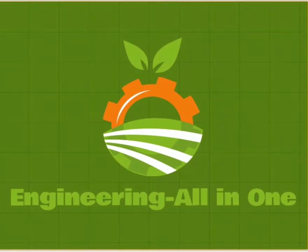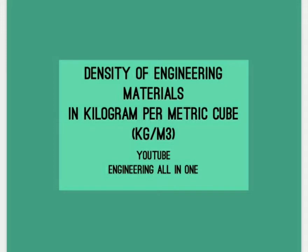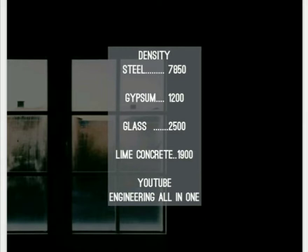Welcome to my channel Engineering All-in-One. Today we are looking at a topic related to the density of engineering materials. We are expressing density as mass per unit volume in kg per cubic meter. The density of steel is 7850 kg per cubic meter.